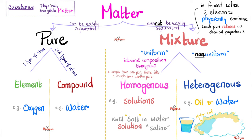Conversely, heterogeneous is non-uniform, as in oil over water. You see this on the road or near a mechanic — there is always motor oil on water. Oil is on top, water is on the bottom, which means non-uniform. I can tell the difference. There is a line of separation between oil and water, unlike saline solutions.